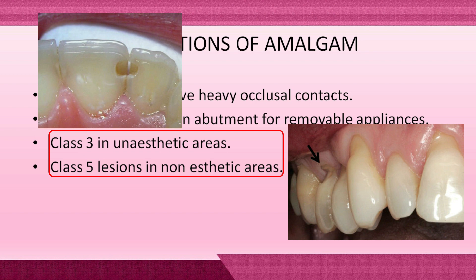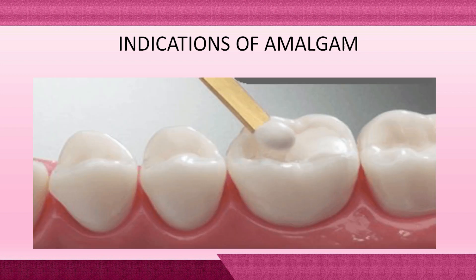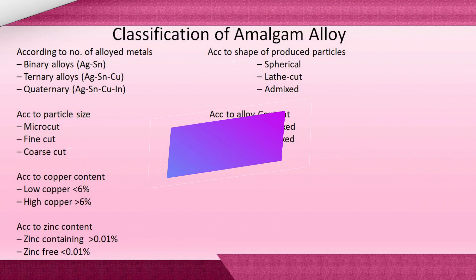It is not preferable, but dental amalgam can also be used in Class 3 and Class 5 cavities — only when aesthetics is not compromised. Nowadays in dentistry, there are so many tooth-colored restorative materials that can be used in aesthetic areas like Class 3 and Class 5 cavities.